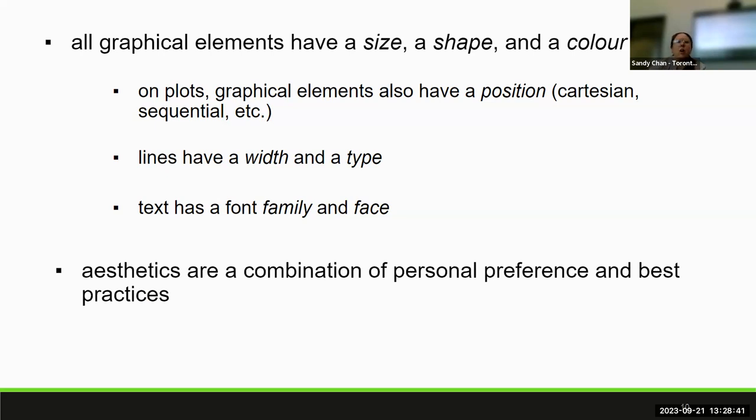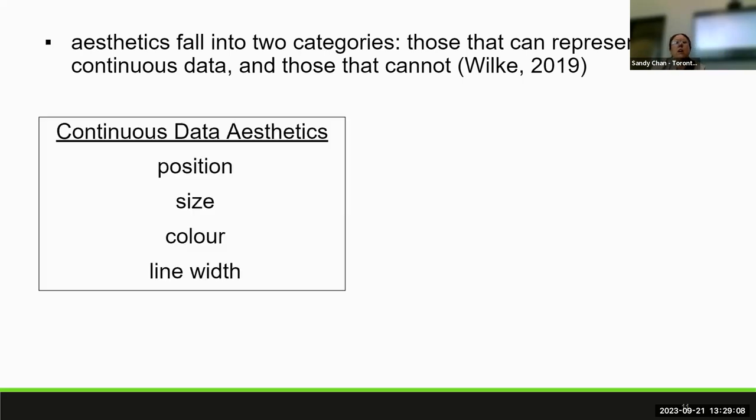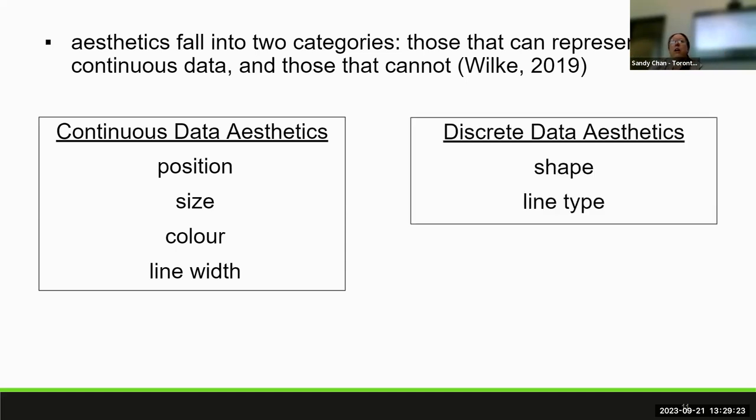So aesthetics fall into two categories, those that can represent continuous data. So values, on some sort of spectrum, and those that can not. So continuous data aesthetics often come, fall to using position, size, color, line width. And those are things that we can kind of use to measure these continuous aspects and discrete are things like shape and line type. So for example, a triangle doesn't necessarily have more value than a square, unless we're talking about sides. Right. And so we keep those things in mind when we're doing our data visualizations.